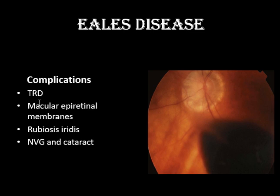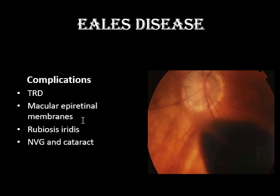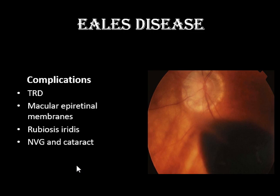Epiretinal membranes form because of long-standing vitreous hemorrhage, which causes damage to the surface layer of the retina. Persistent TRD or persistent peripheral neovascularization, if not treated, leads to rubeosis iridis — blood vessels on the iris surface and on the angle of the anterior chamber — which then causes neovascular glaucoma (NVG). There is also complicated cataract.